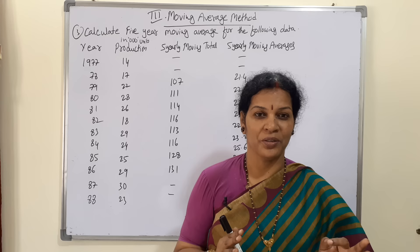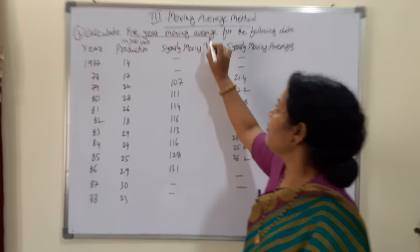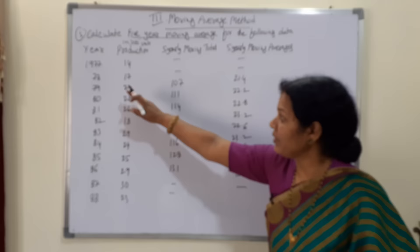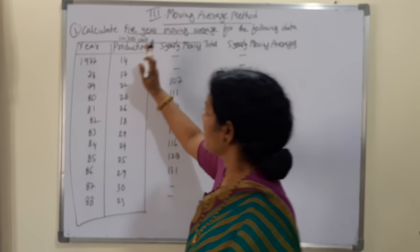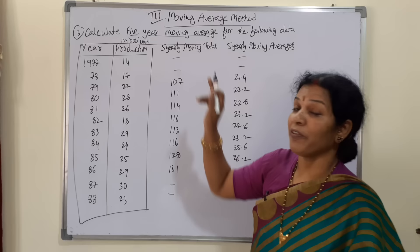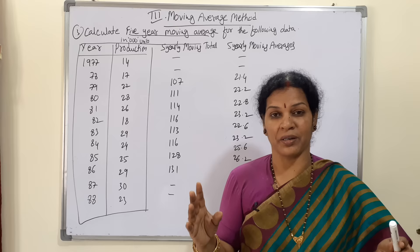We will enter into the problem so that we will have more clarity. The problem says: calculate five-year moving average for the following data. The data given is year and production. It can be anything — three-year, four-year, two-year moving average — but right now in this problem they are asking us to calculate five-year moving average.